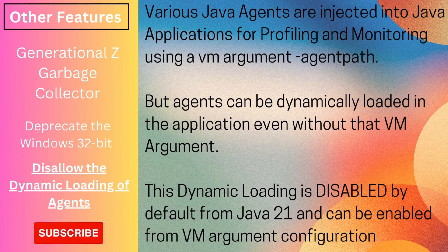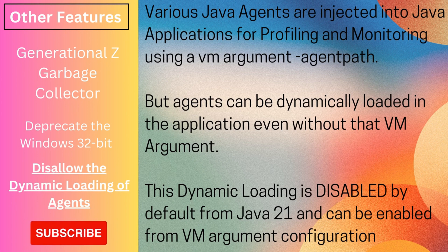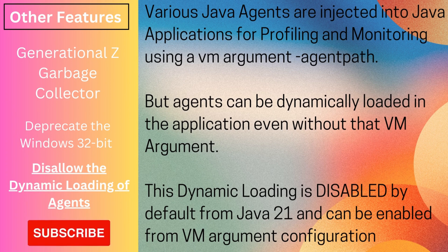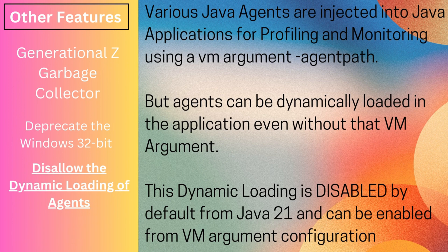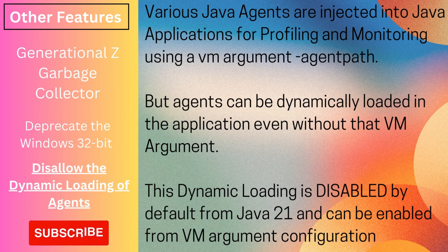Next is the disallowing of dynamic loading of agents. We often use agents developed in Java or other languages, injecting them via parameters like -agentpath. These agents load into your application and modify it at runtime for measurements, monitoring, or profiling. If the application was started without -agentpath, we were still able to inject agents at runtime using the Attach API — this dynamic loading was enabled by default before Java 21, representing a security risk. From Java 21, dynamic loading is disabled by default and can only be explicitly enabled via a VM argument.